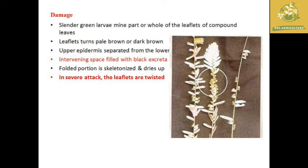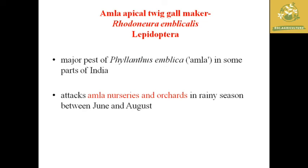The damage caused by the leaf roller on Amla is that it mines parts of the leaves and whole leaflet compounds, turning them pale brown or brown. The intervening space is filled with black excreta, indicating infection. In several cases, the leaflets are twisted around the whole plant.